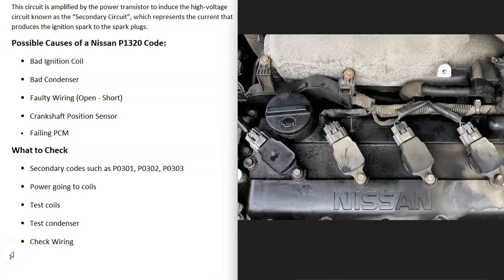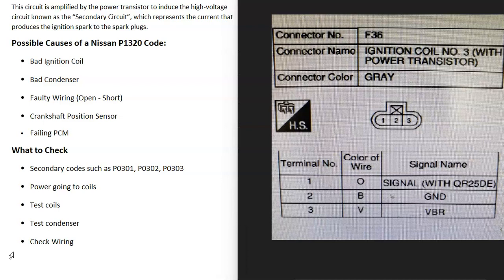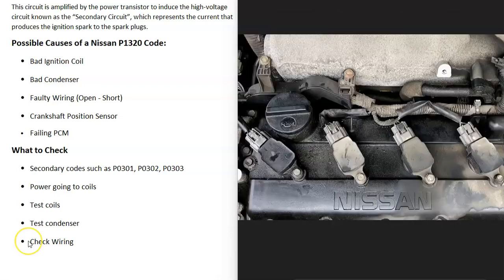Next, check that there is power going to the coils. It's a good idea to get a wiring schematic for your specific Nissan. Typically, each coil will have a signal wire going back to the onboard computer, a ground, and a voltage pin. You can verify that voltage is present at the coils and that there are no issues there.